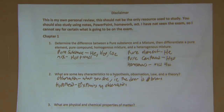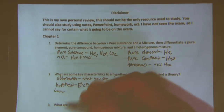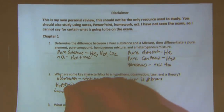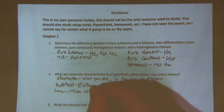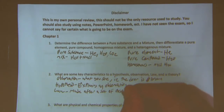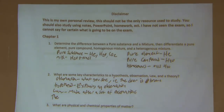Key words you find in a hypothesis normally include: 'if' statements, 'as a result of,' 'because of.' A law is something seen in nature, usually made after a set of observations. A theory would be a law that is made after many tests have proven it true.